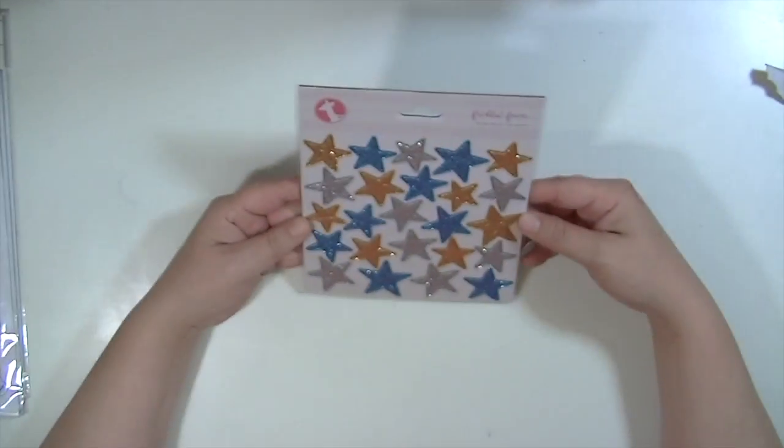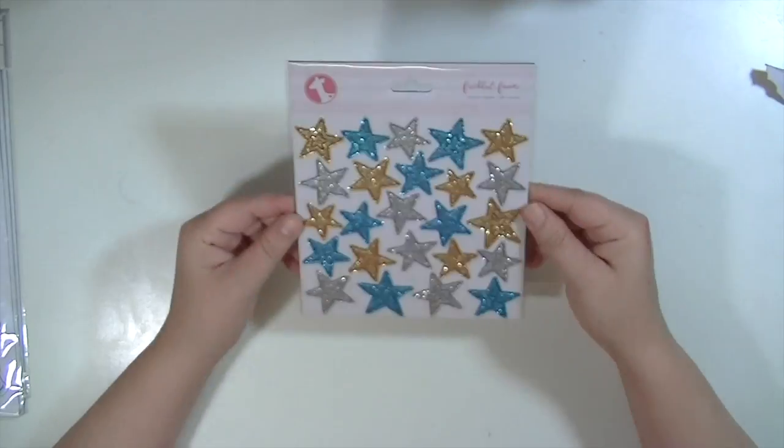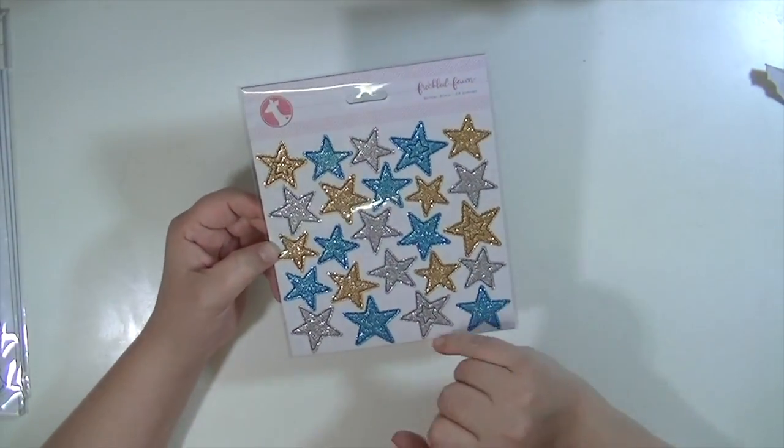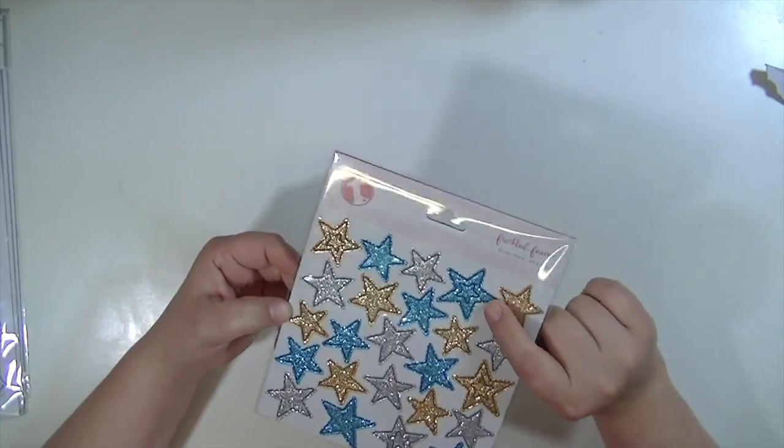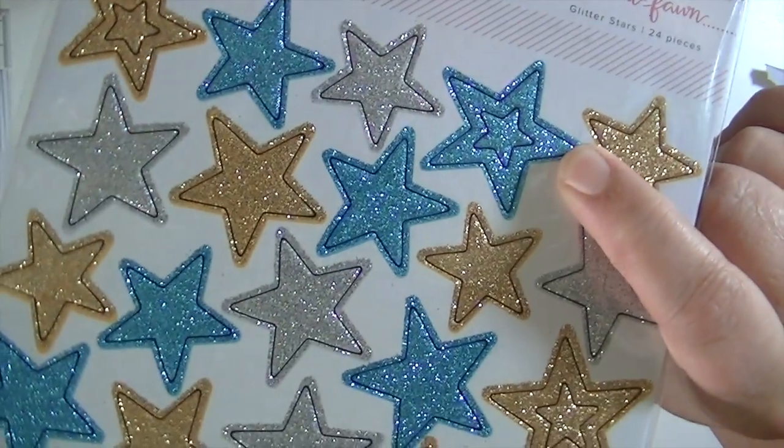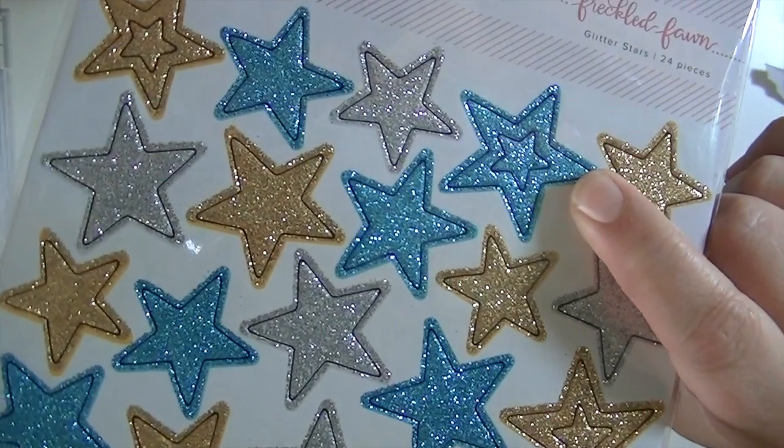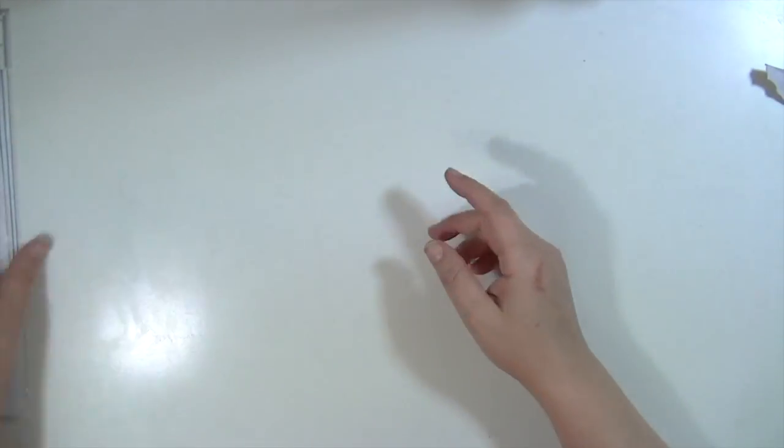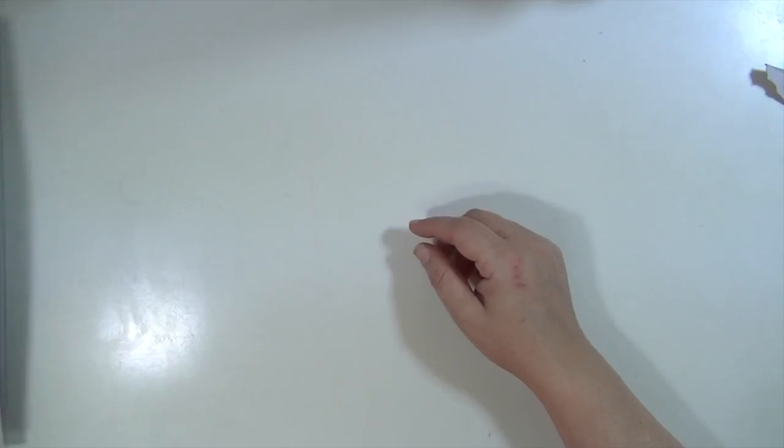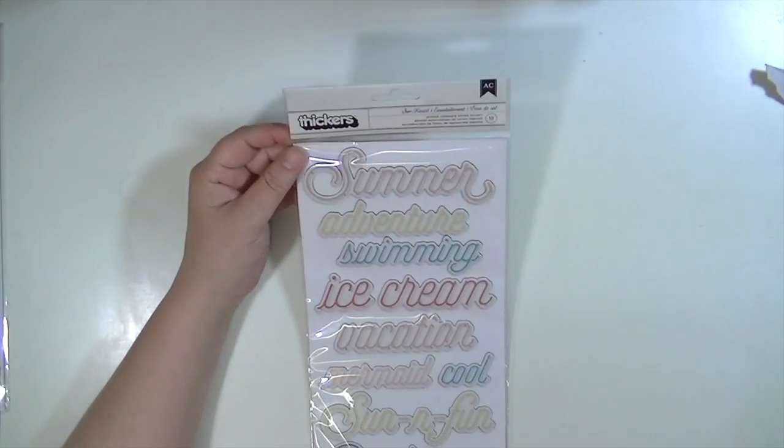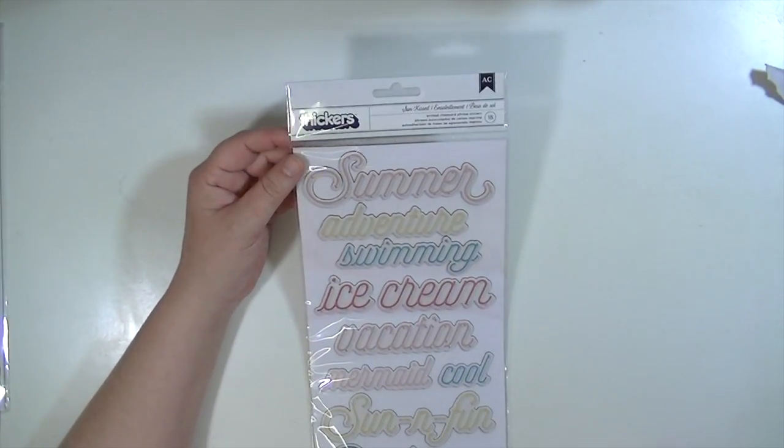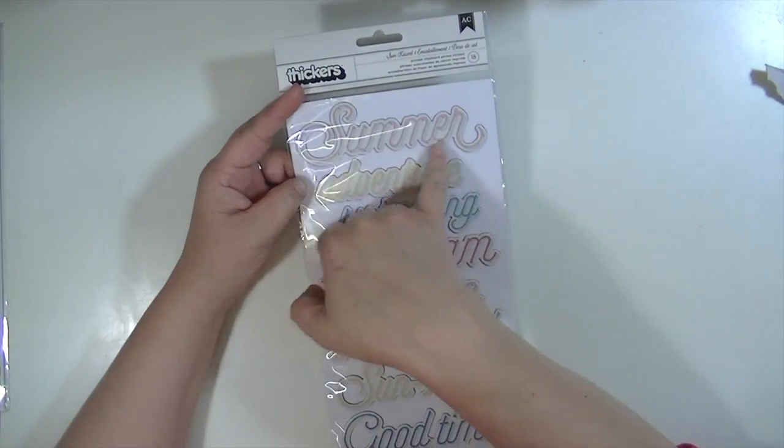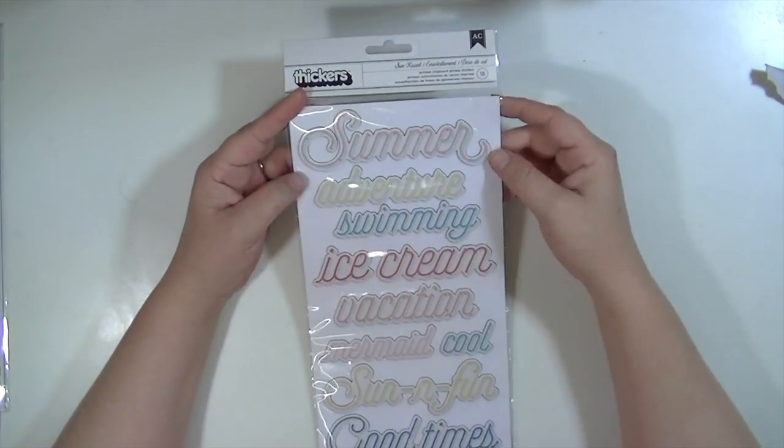From Freckled Fawn. That is fun. A pack of Glitter Stars. There are 24 pieces. In some of them, they're stacked. So it would be the outline and then the star in the center also. Which is cool. Thickers called Sun Kissed. I'm guessing that these go with the poolside line. So it's like big words, chipboard words. Summer, Adventure, Swimming, Ice Cream, Vacation, Mermaid, Cool, Sun and Fun, Good Times.